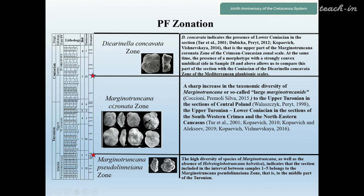A sharp increase in the taxonomic diversity of Marginotruncana, or so-called large Marginotruncana, is noted in the upper Turonian in sections of central Poland and in the upper Turonian–lower Coniacian in sections of southwestern Crimea and northeastern Caucasus. Higher up, the Dicarinella concavata zone indicates the presence of the lower Coniacian in the section, corresponding to the upper part of the Marginotruncana coronata zone of the Crimea-Caucasian zonal scale.